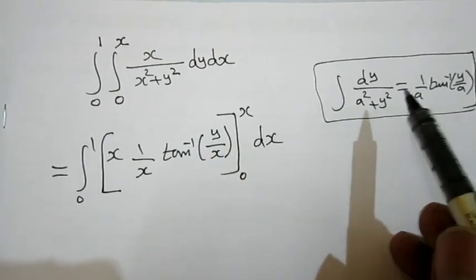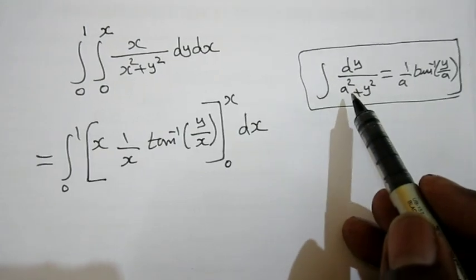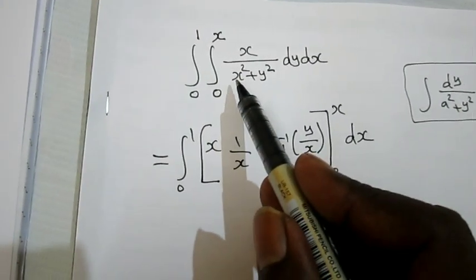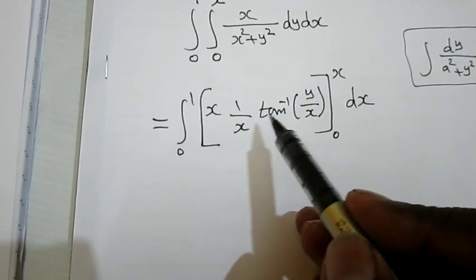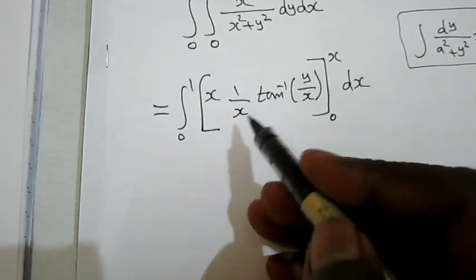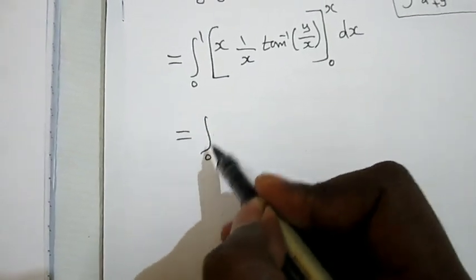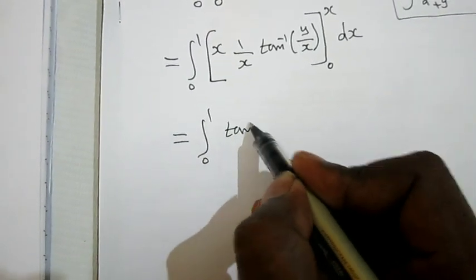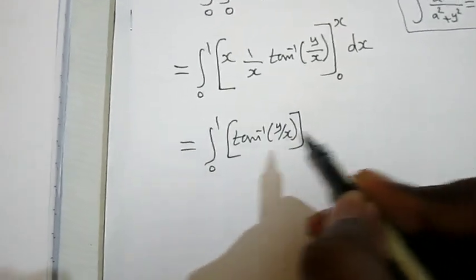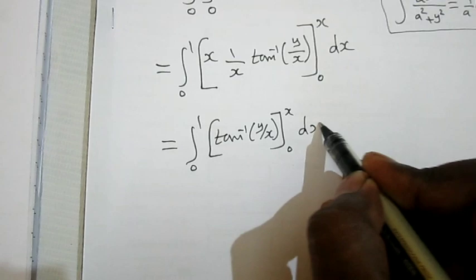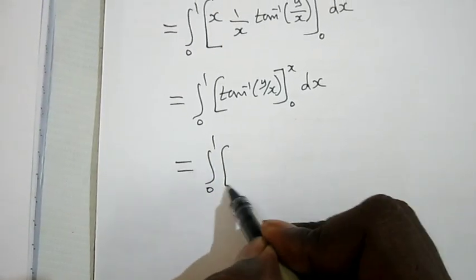Comparing with the formula: integration with respect to y, instead of a squared we have x squared, so 1/a tan⁻¹(y/a) becomes (1/x) tan⁻¹(y/x). This x cancels, so we have the integral from 0 to 1 of tan⁻¹(y/x), with limit 0 to x, into dx.